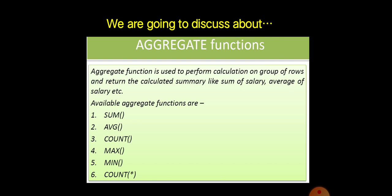We are going to discuss about aggregate functions. Aggregate function is used to perform calculations on group of rows and return the calculated summary like sum of salary, average of salary, average of the mark, count of number of students, maximum value within a column, minimum value within a column. The available aggregate functions in MySQL are SUM, AVG, COUNT, MAX, MIN, and COUNT(*).